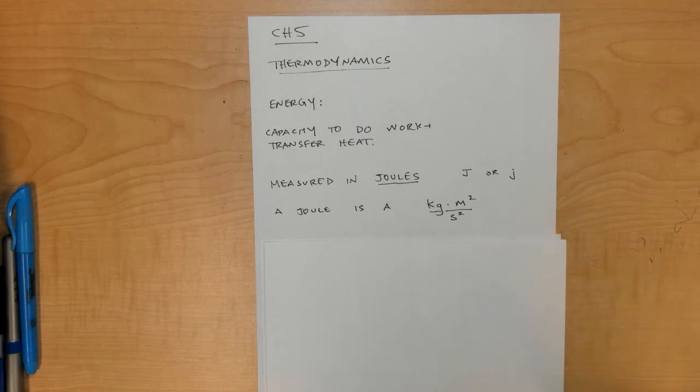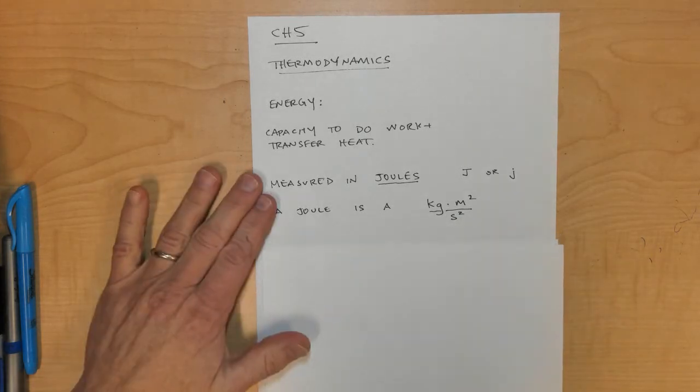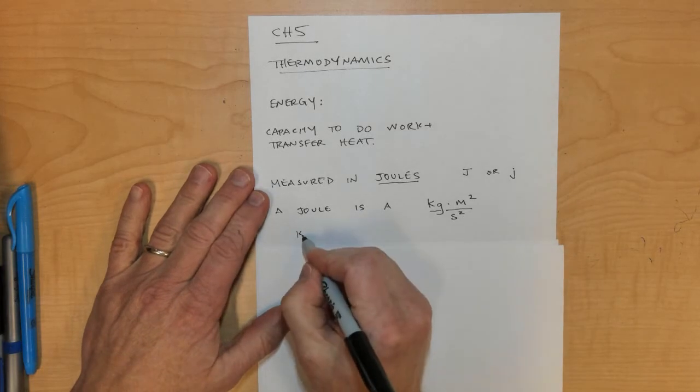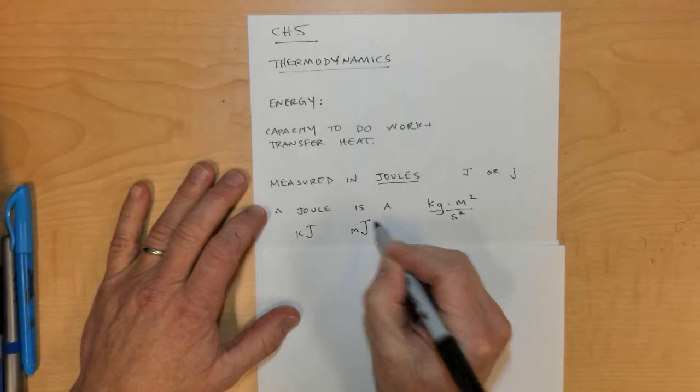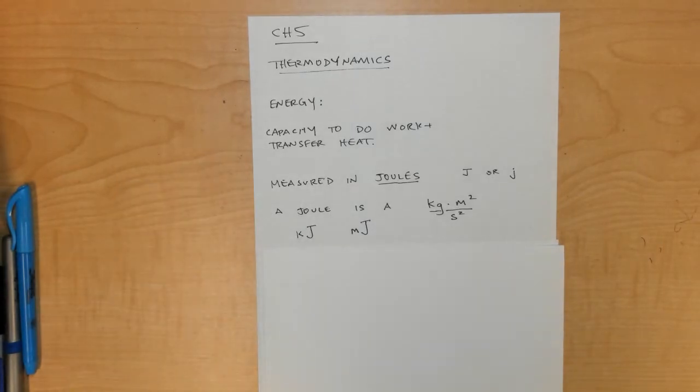It's a derived unit, yet you can still put prefixes in front of it like a K for kilojoule or an M for millijoule, and so it fits right into the normal metric system.